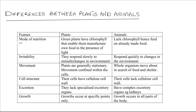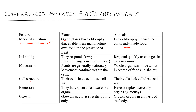The first difference is in terms of nutrition — the mode of nutrition. Plants manufacture their own food while animals feed on already manufactured food. This is because plants, especially green plants, have chlorophyll that enables them to trap light energy that they use to manufacture food.